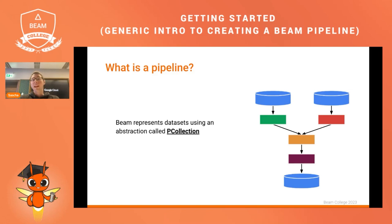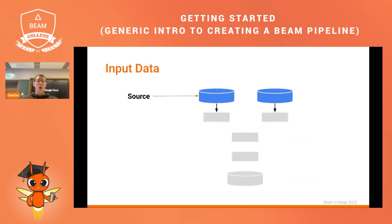The benefits of PCollections are that they are immutable — once they are created they cannot be changed, which helps minimize the risk of data races when transformations are applied. They are also type-safe, so when you create a PCollection you have to define the type and only elements of that type can be added. For portability, each runner knows how to deal with a PCollection, so there is no need to change the data structure if you decide to move from one runner to another.